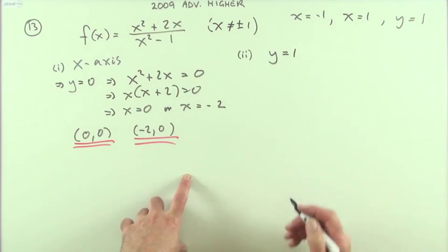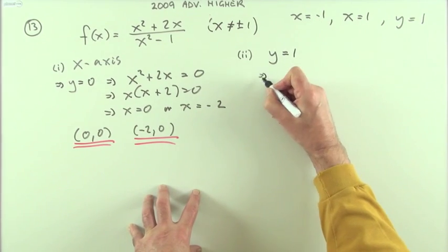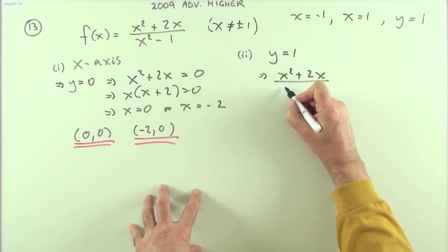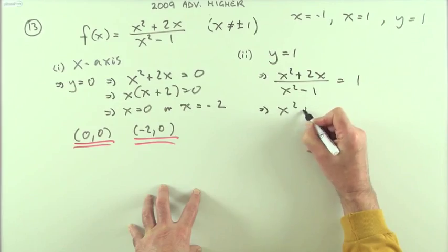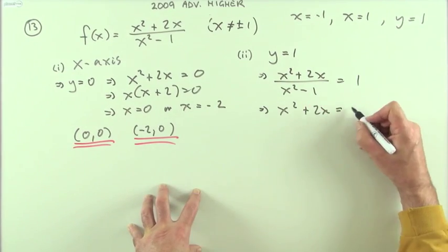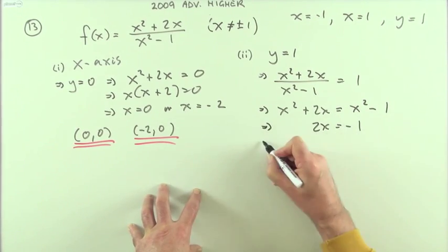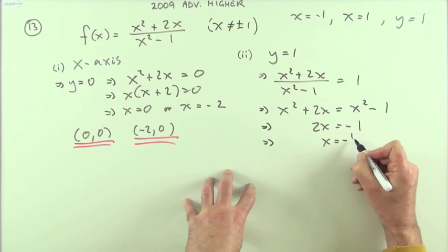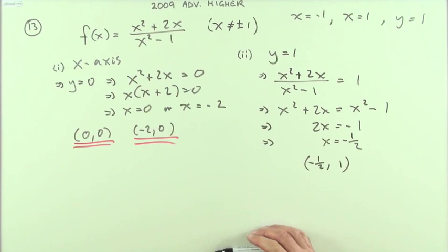The next bit, where does it cut this horizontal asymptote? If y = 1, that means the complete expression should equal 1. Multiply both sides by x² - 1, which is fair enough because that can never be 0. So x² + 2x = x² - 1. They just knock themselves out. 2x = -1, which means x = -1/2. So that point's going to be (-1/2, 1). For whatever reason that was required, maybe the graph will make that clear.